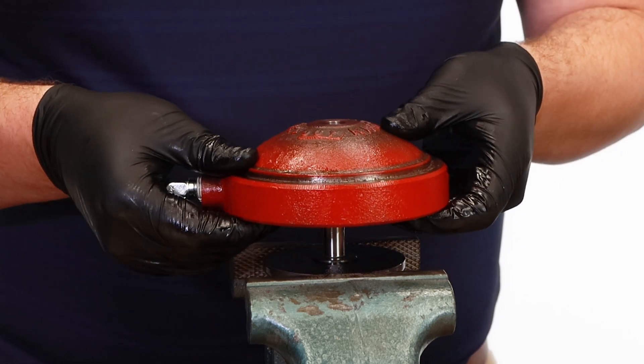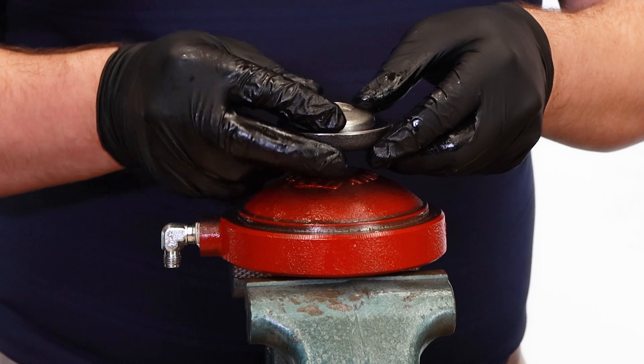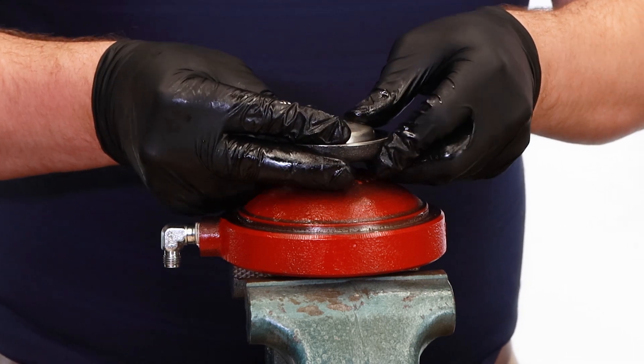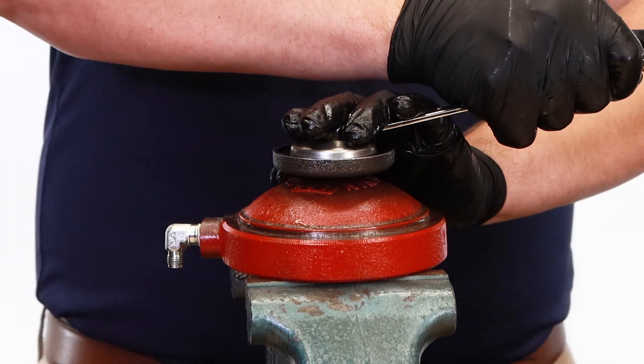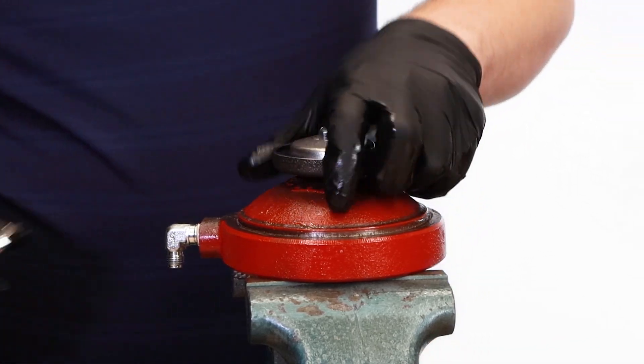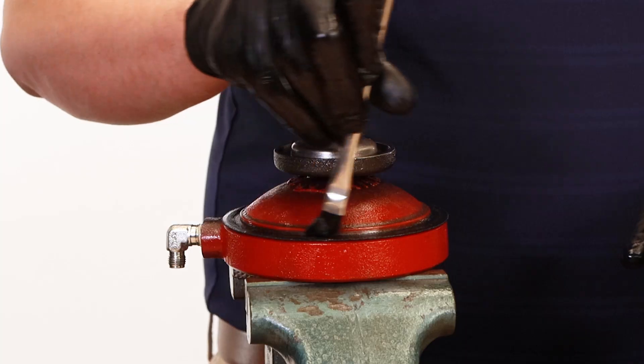Reassemble the lower housing, seat, ratio plug, and nut. Put on the gasket, being sure to grease both sides.